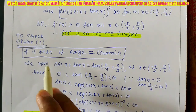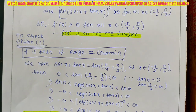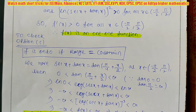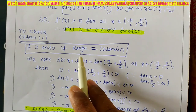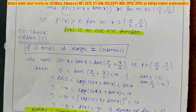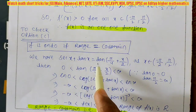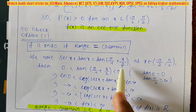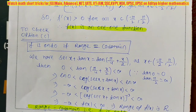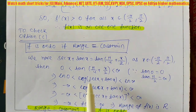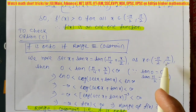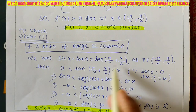Now we check option C — whether f is onto. The trick is: range = codomain means the function is onto. So we find the range of f(x). We use the well-known trigonometric identity: sec x + tan x = tan(π/4 + x/2). When x ∈ (-π/2, π/2), we evaluate tan(π/4 + x/2) at the boundary values.